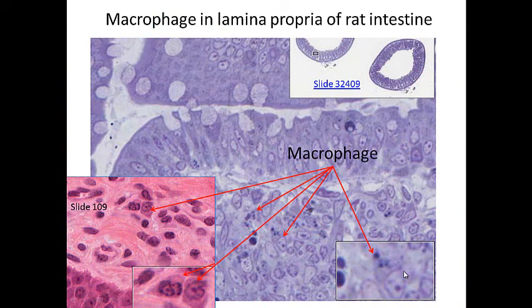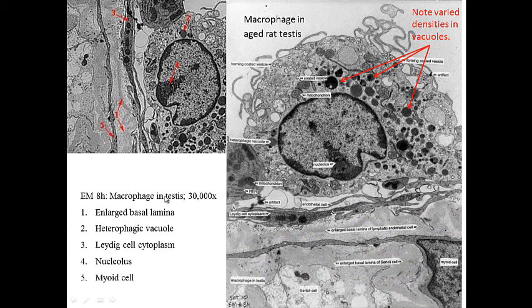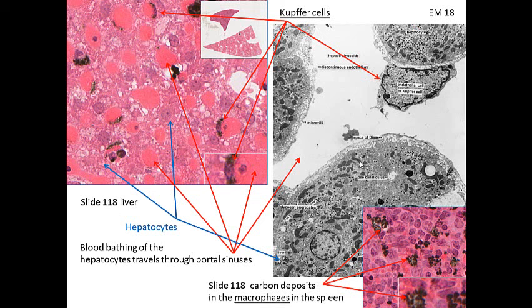Macrophage-like cells are found all over the body — in the spleen, and here in the lamina propria. There's a cell here with granules of digestion and a nucleus. At higher magnification, a characteristic of macrophages is that they have vacuoles or granules of different densities, and even within a single macrophage the darkness varies, relating to the degree of degradation of whatever has been phagocytized.